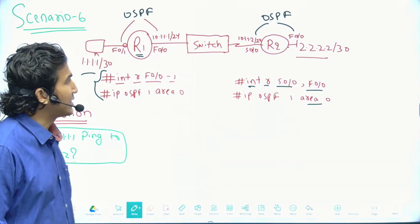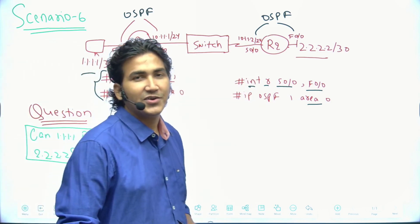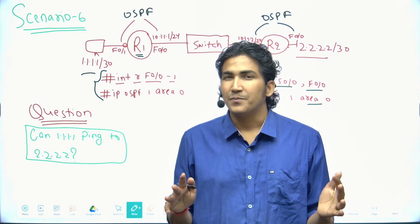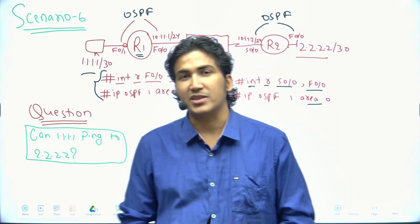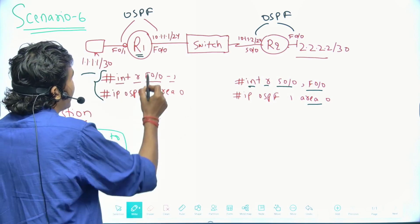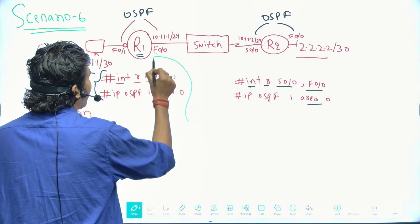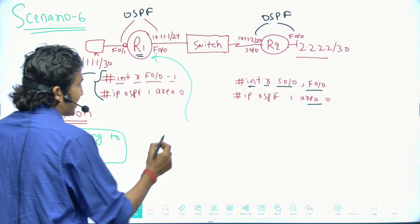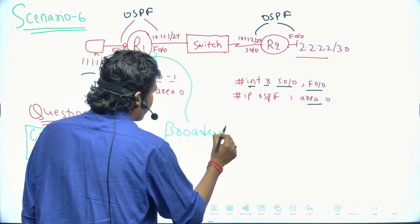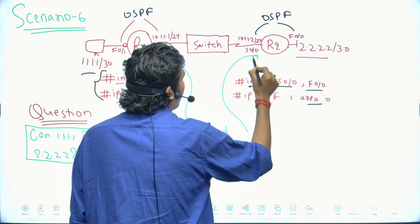So the question is: PC1 and PC2 communicate or not? According to me, the answer is no. Both PCs cannot communicate with each other. The reason is, you know, by default OSPF network type on the Ethernet link is broadcast. And by default, OSPF network type on the serial link...